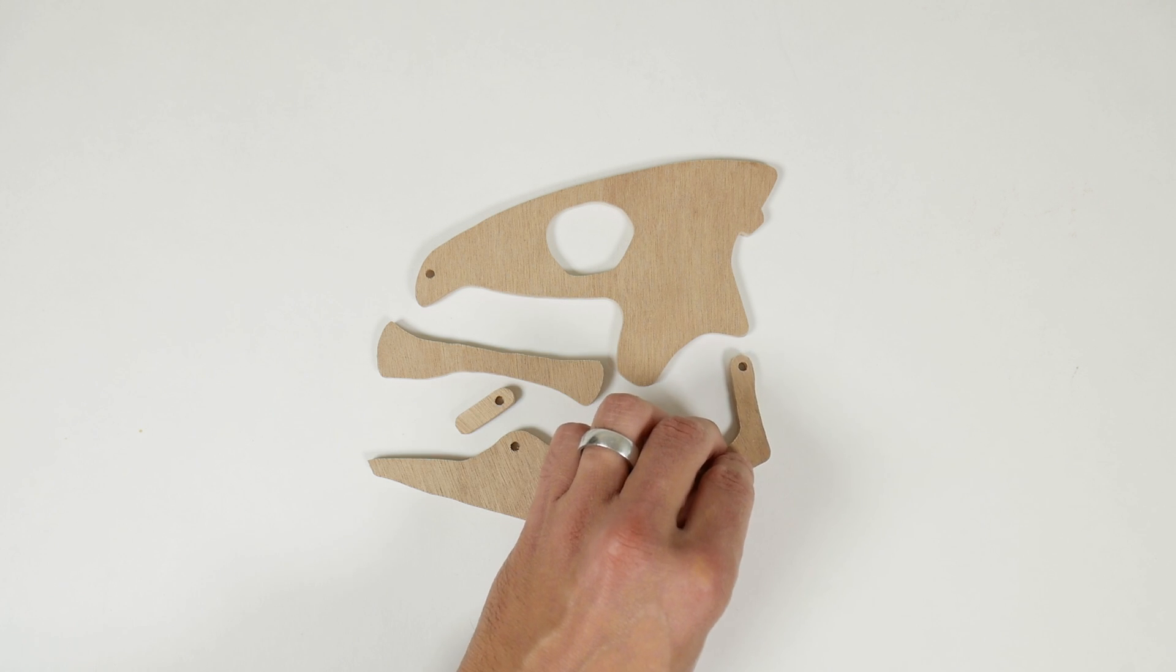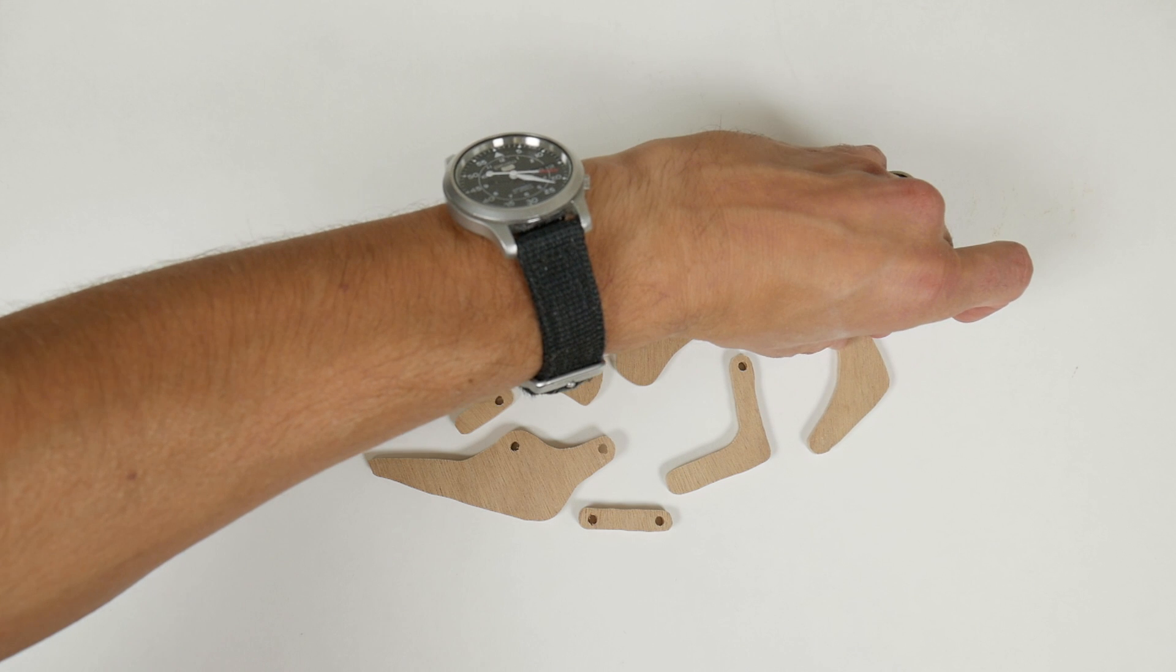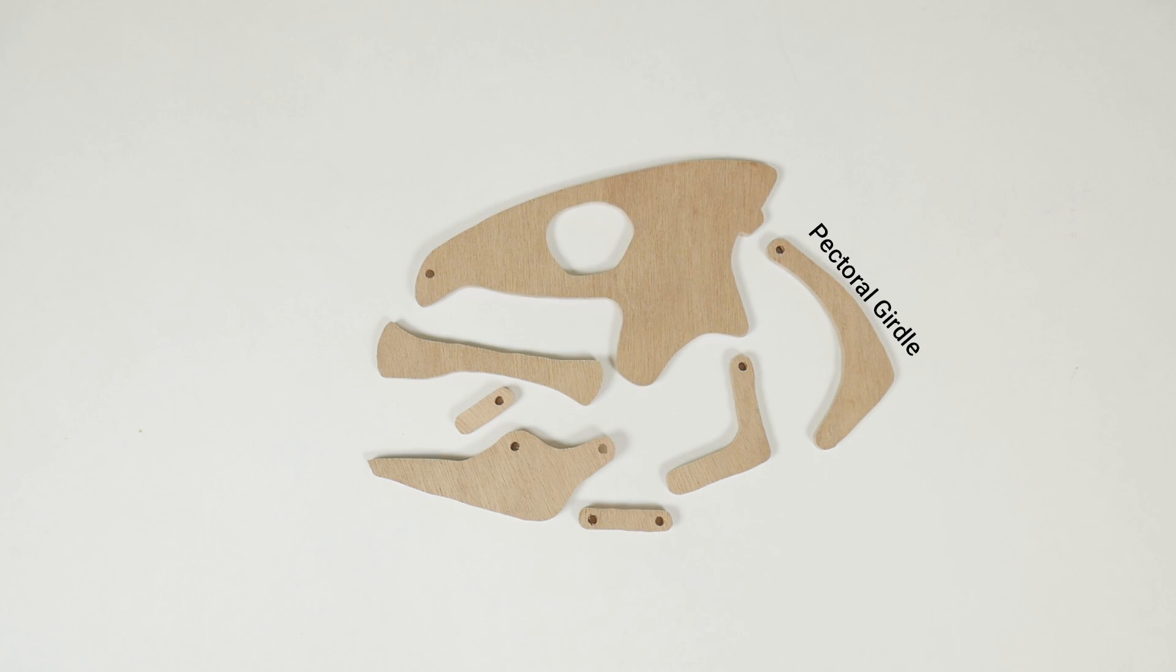Then there's the hyoid, which is composed of a bunch of little bones. It's connected to the lower jaw via the geniohyoideus muscle. The long piece on the back is the pectoral girdle, which technically isn't part of the skull, but it's important in jaw opening. It's composed of several bones and it's also the attachment point for the pectoral fins. The pectoral girdle is connected to the hyoid via the sternohyoideus muscle.